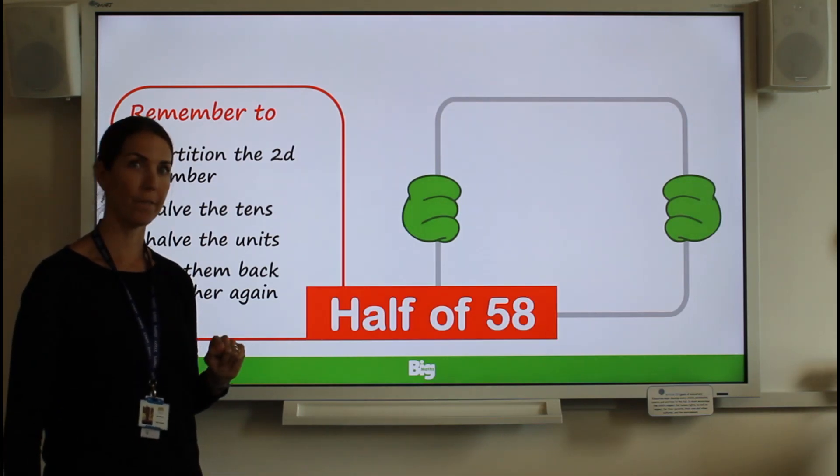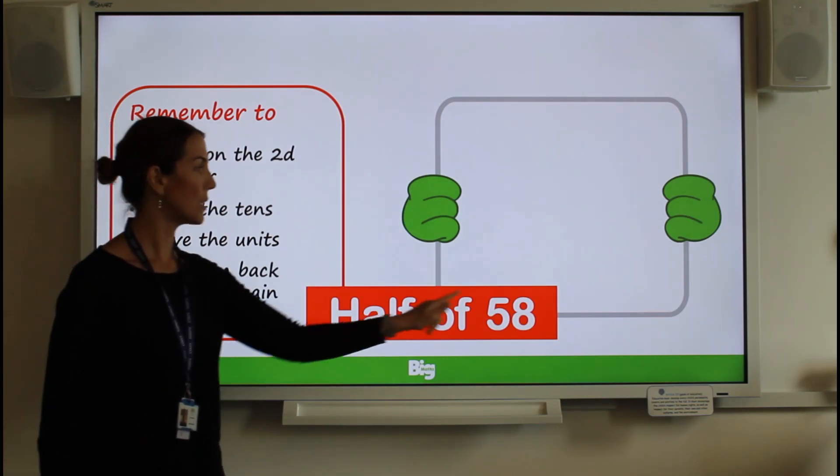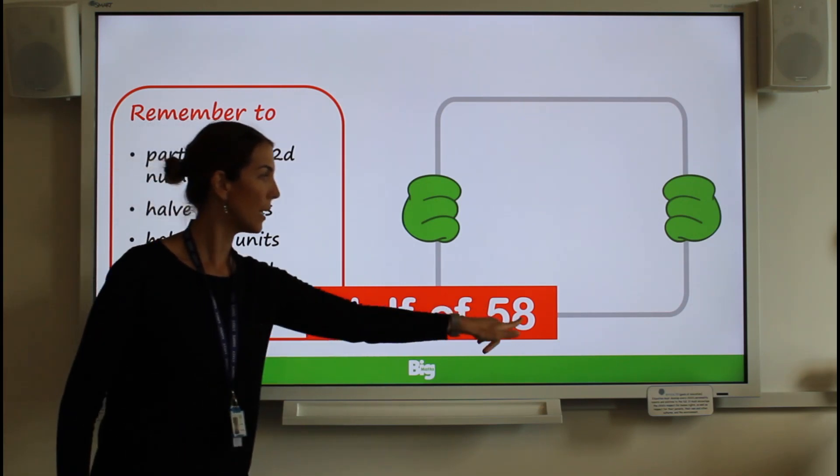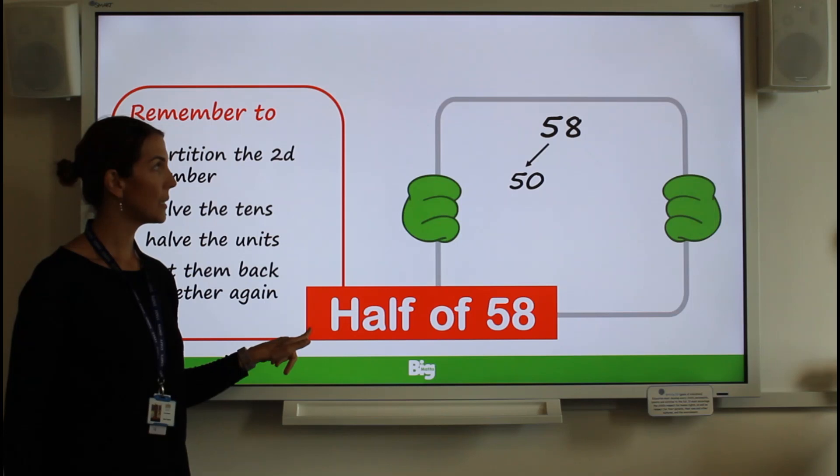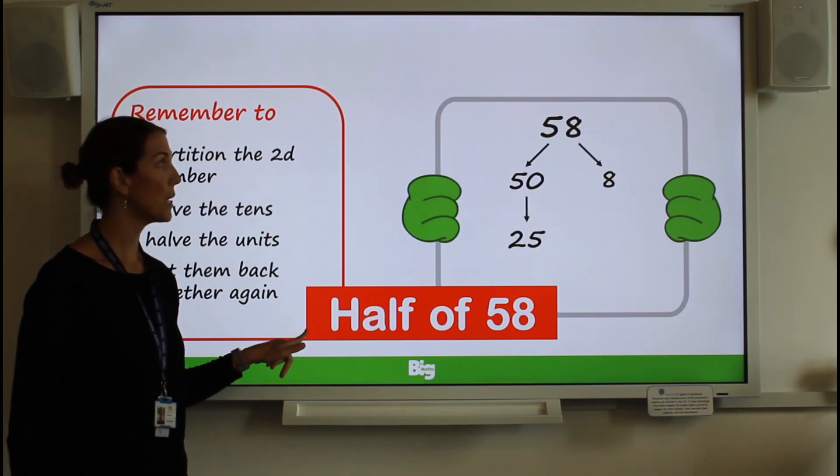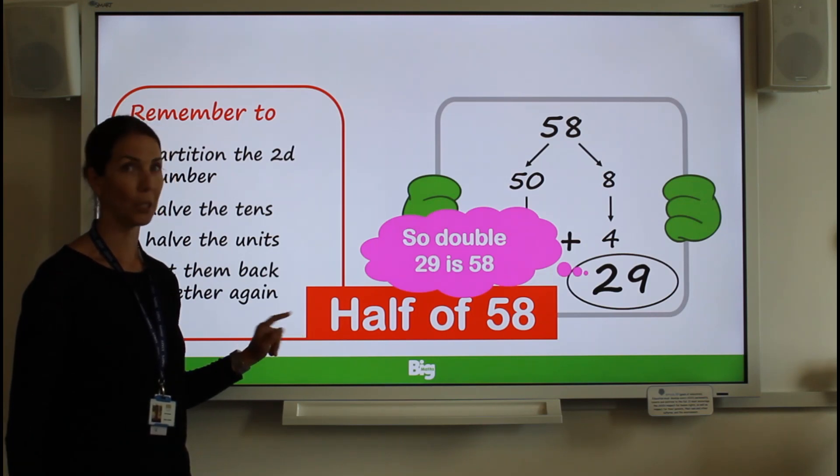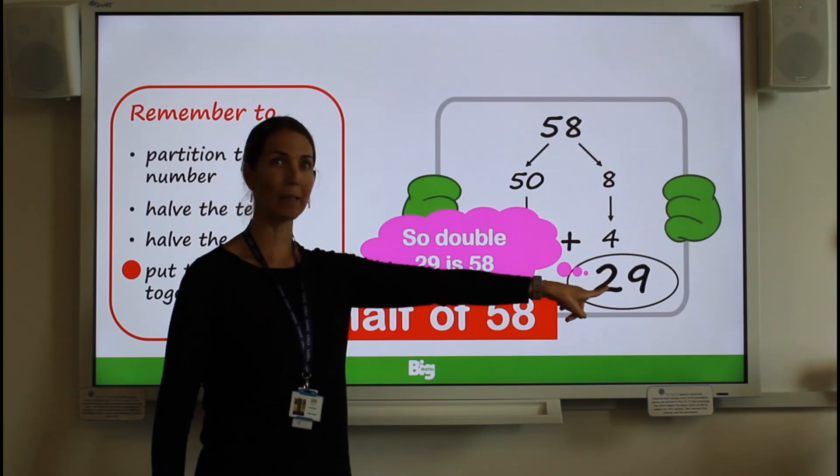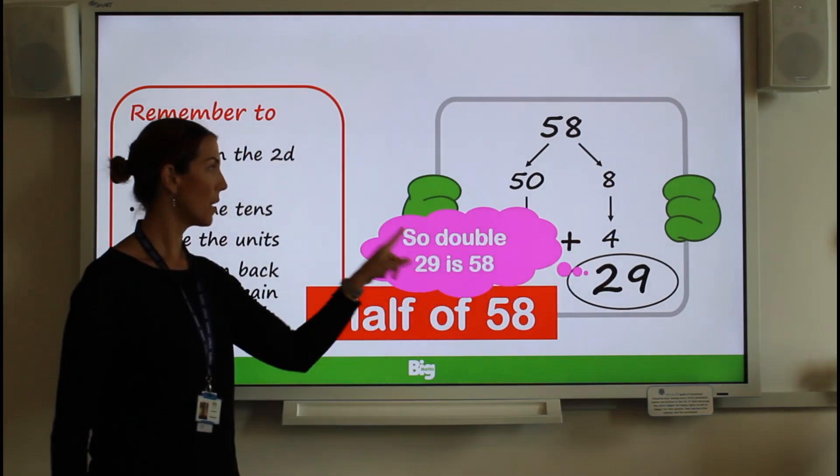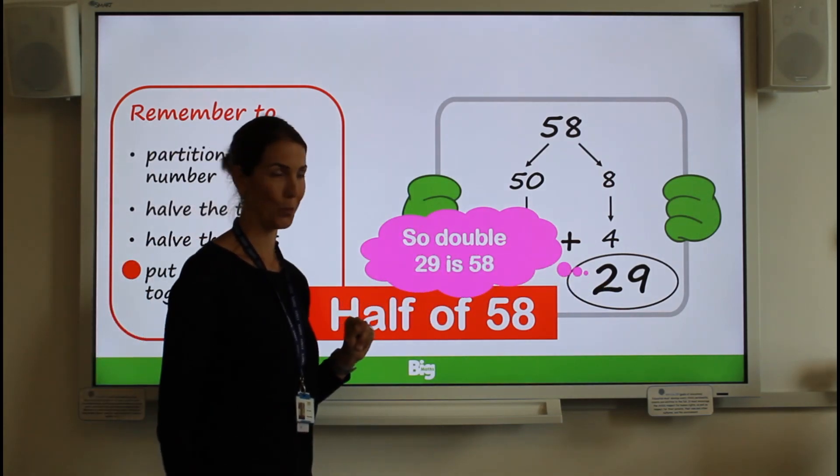Let's do the next one, 58. Partition into a 50 and into an 8. Step two: half my tens. Step three: half my ones. And then put it back together again. Don't forget to work out the inverse. So if half of 58 is 29, double 29 would be 58.